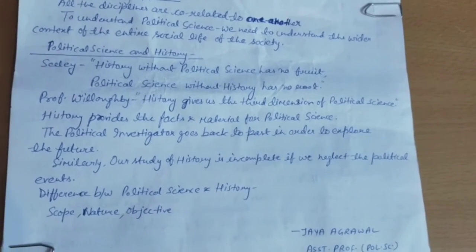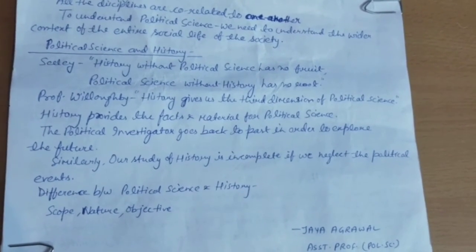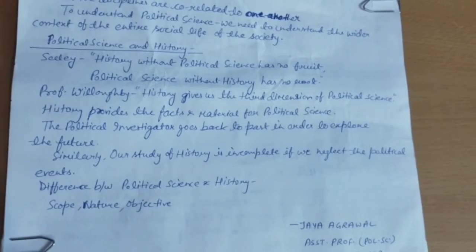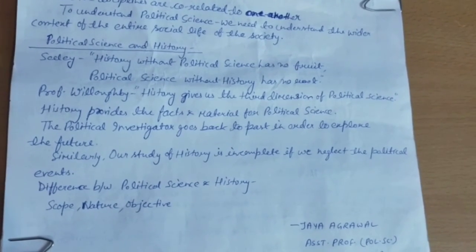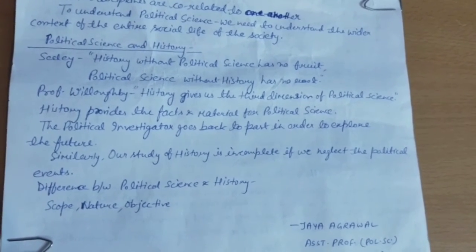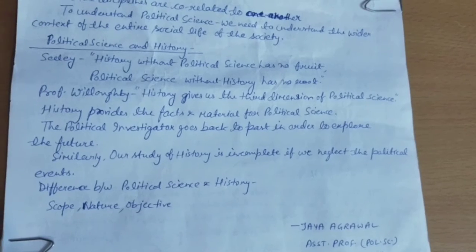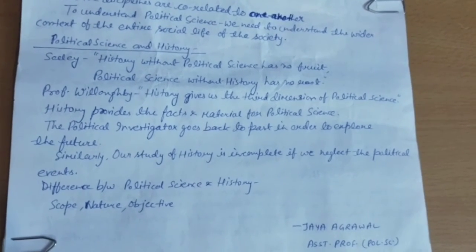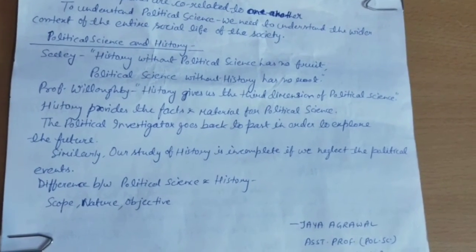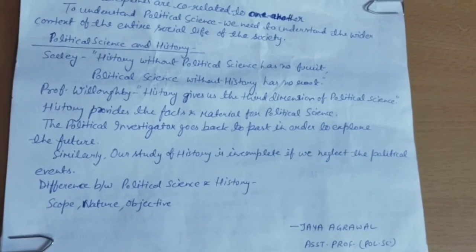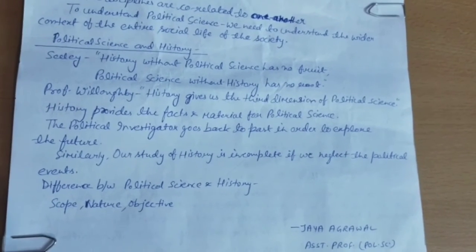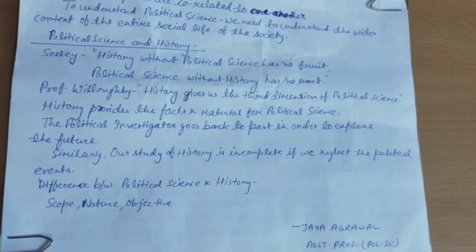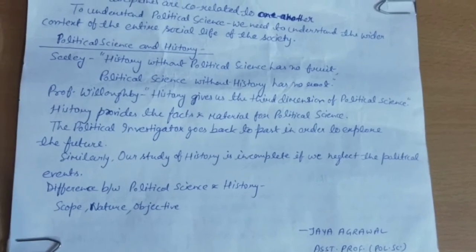History not only merely records events but analyzes courses and points of tendencies. Political science uses historical facts to discover general laws and principles. It selects, analyzes, and systematizes the facts of history in order to extract the permanent principles of political life.